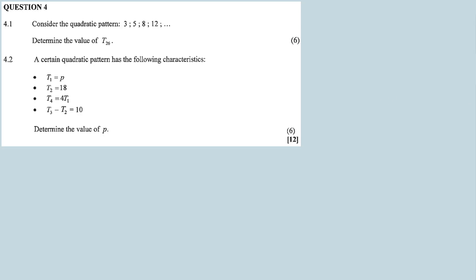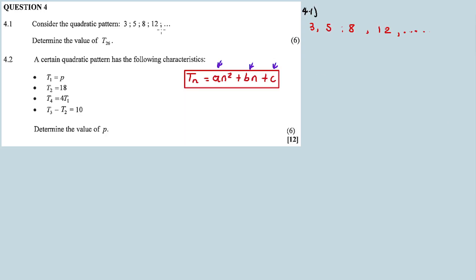Before calculating T26, we first need to find the n-th term, where Tn equals an squared plus bn plus c. So we have to calculate a, b, and c. The pattern given is 3, 5, 8, 12. The first differences are: 5 minus 3 is 2, 8 minus 5 is 3, 12 minus 8 is 4. The second common difference is 3 minus 2 equals 1, and 4 minus 3 equals 1. This confirms it is a quadratic pattern.